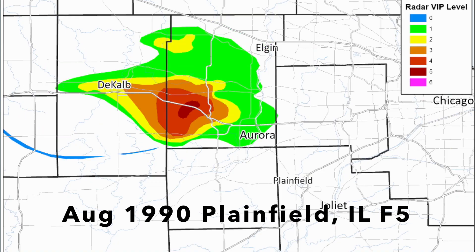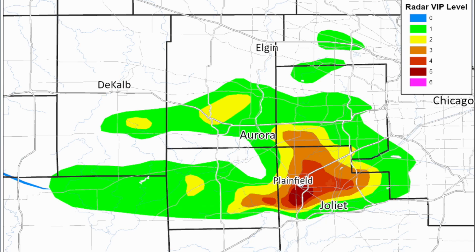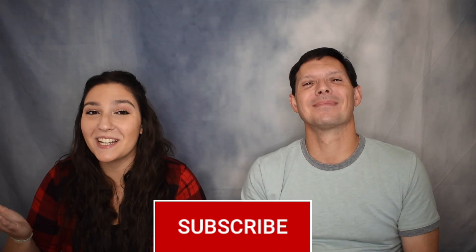What's up guys? It's Kayla and Jim and welcome back to another Meteorology Monday. Today we are going to talk about the 1990 Plainfield, Illinois F5 tornado. This storm really took a lot of people by surprise — a very interesting case study. We're going to talk about a few things as to why they were caught so off guard. Give this video a thumbs up if you're enjoying it and subscribe down below so you never miss the next Meteorology Monday.